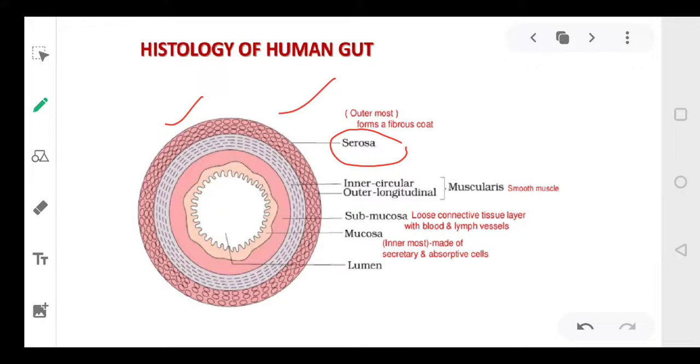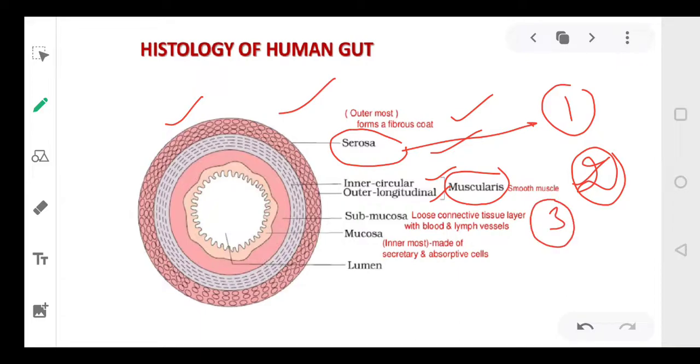Then there are two layers inner to this. One is made up of inner circular longitudinal muscles. That is why it is called muscularis. It basically contains smooth muscles. So first is serosa, the outermost layer. The second is muscularis layer. The third one is submucosa. This submucosa layer is made up of loose connective tissue and there are certain blood vessels and lymph vessels present in this layer. Then the last, fourth layer is mucosa. It is the innermost layer and it is made up of secretory and absorptive cells.